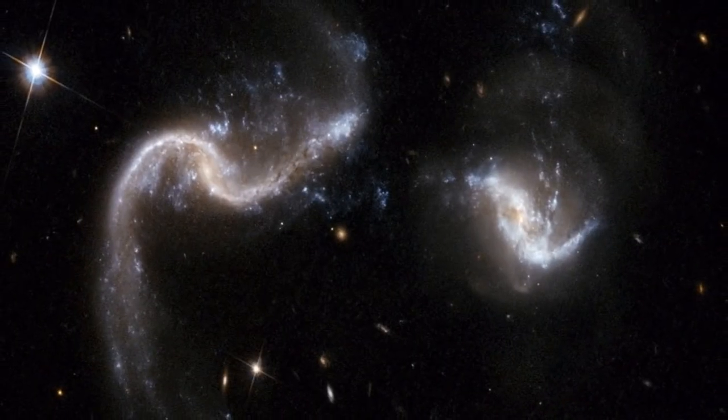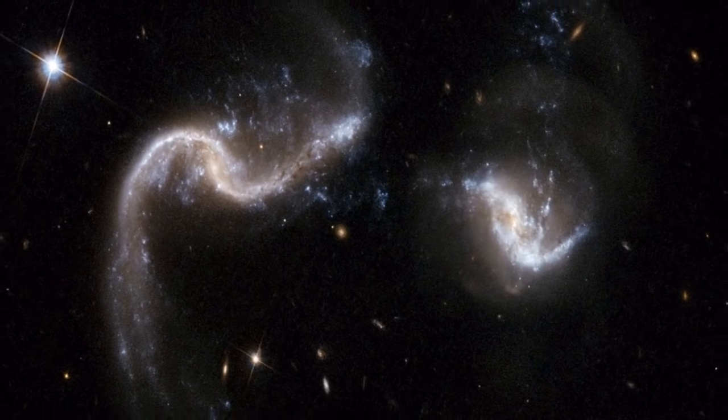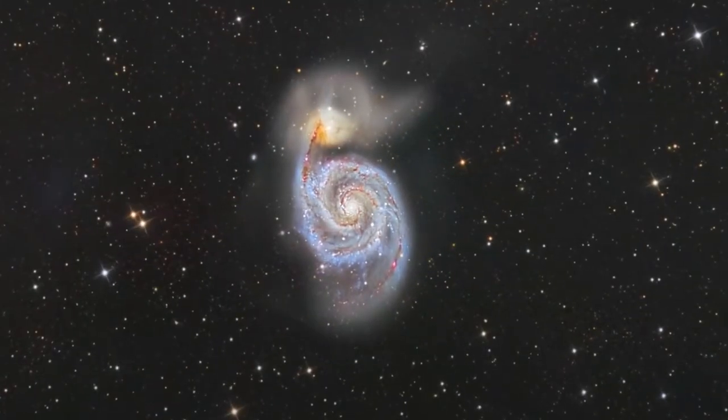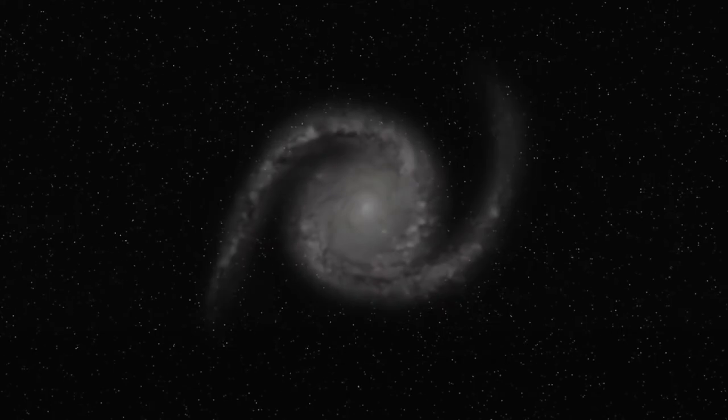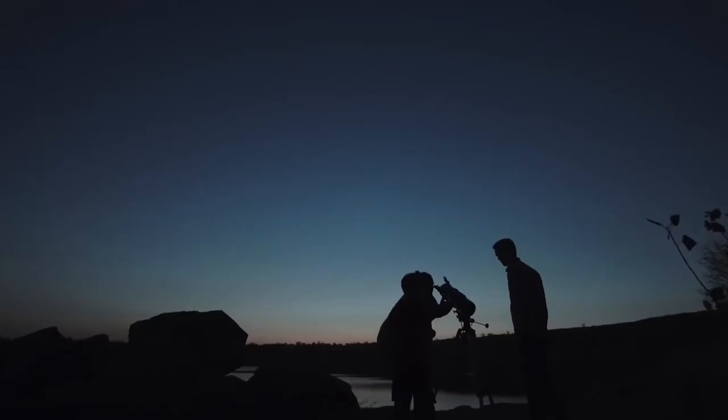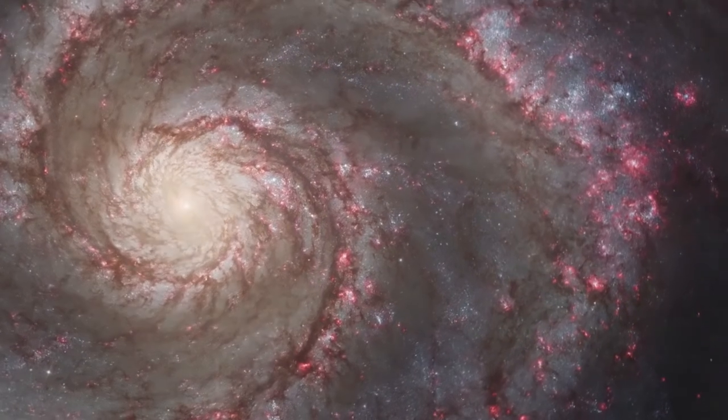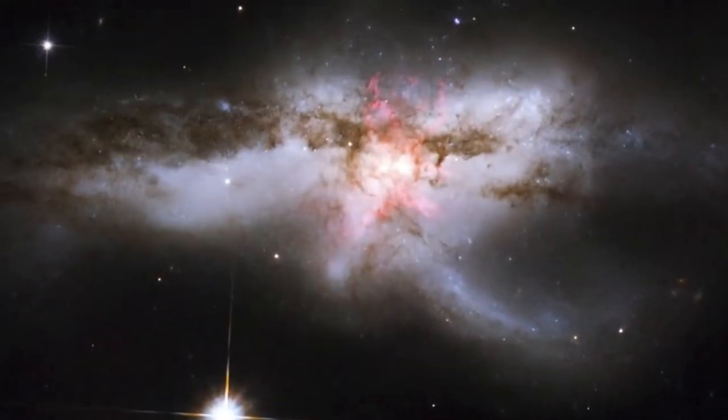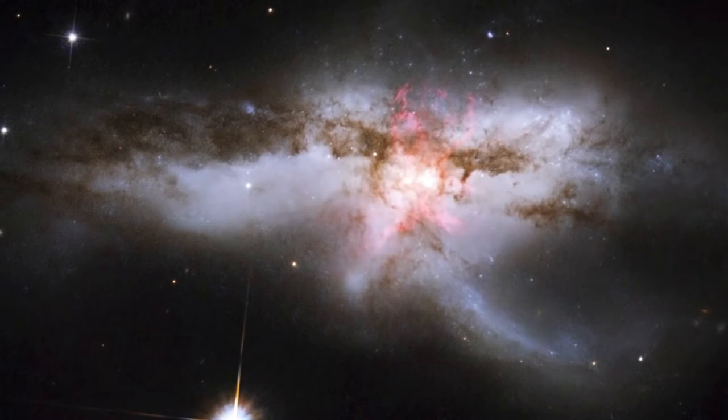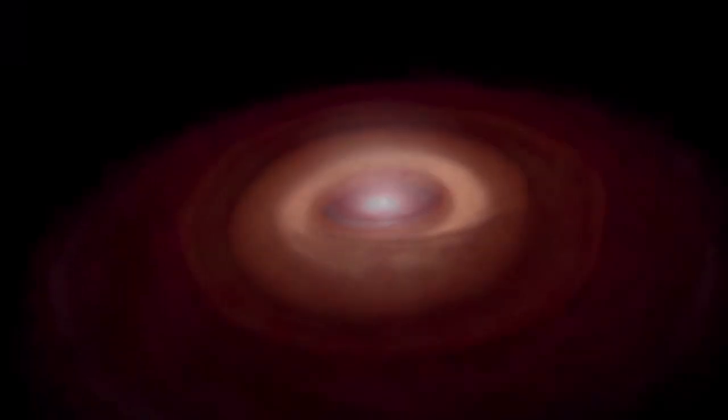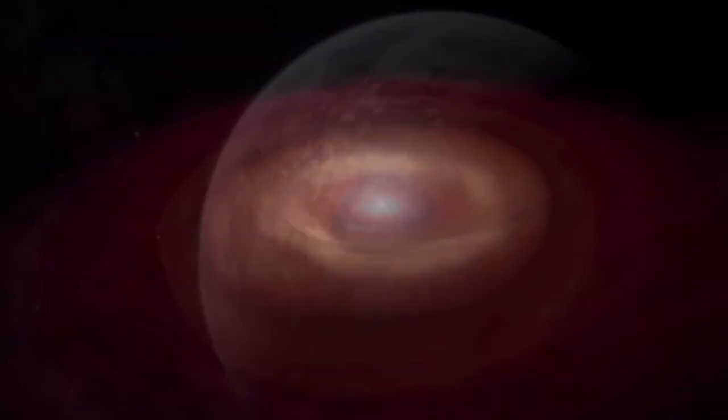Eventually, the burst of star birth will slow down and stop. The resulting new galaxy will assume a fairly boring-looking elliptical shape. That, in a nutshell, is what happened to NGC 474. And it's the fate of Milkdromeda, a probably featureless elliptical that once was two beautiful spiral galaxies.